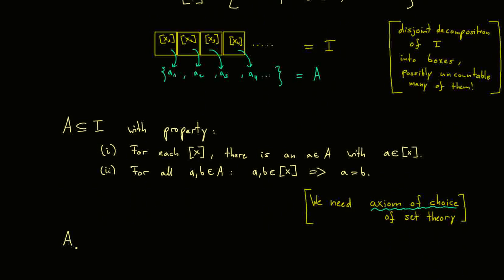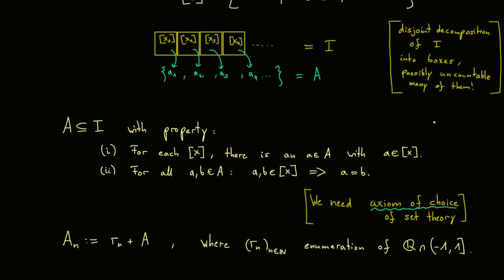Now we have fixed the set A, and I want to shift it by a rational number. I define A_n as r_n plus the set A, where r_n is a rational number. More concretely, I want a sequence r_n over the natural numbers that enumerates all rational numbers in the real interval minus 1 to 1. You should see that we can use the fact that the rational numbers are countable when we want to apply sigma additivity later.